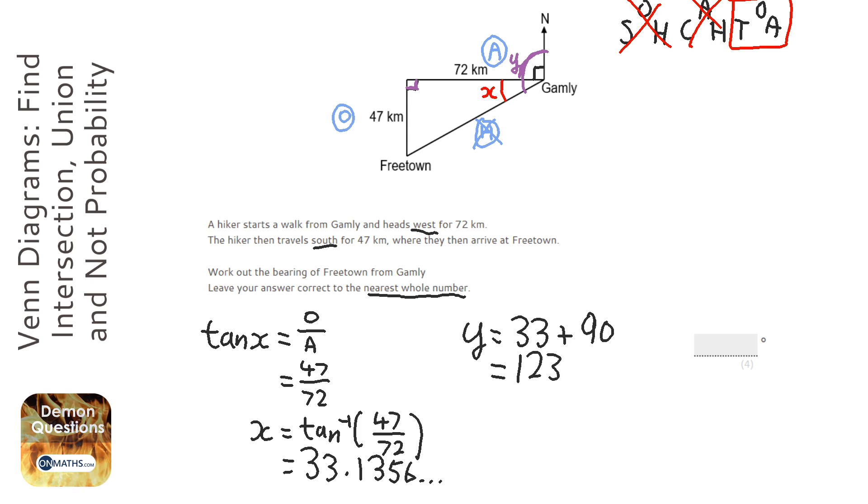OK, now bearings, something that we've got to remember, are always from north going clockwise. So it's always going to be like that. It's going to be that angle there. So, to do that, we're going to do 360. We're going to take away the 123, because that's what we don't want. So, on a calculator, 360 take away 123, and that's 237. So the answer is 237 degrees.